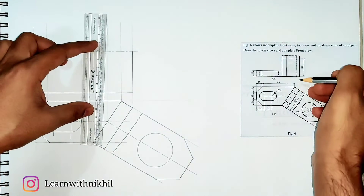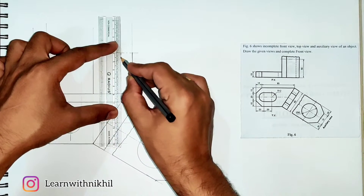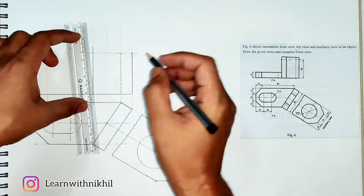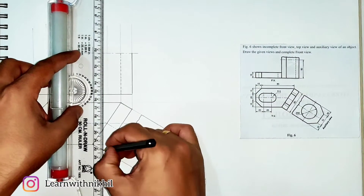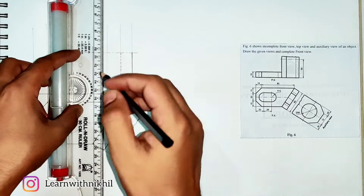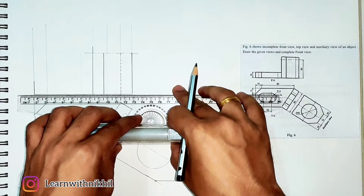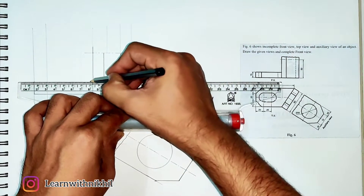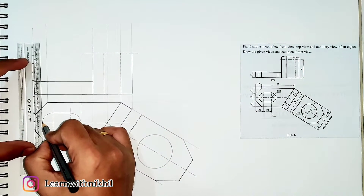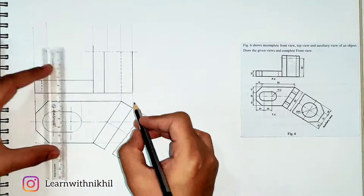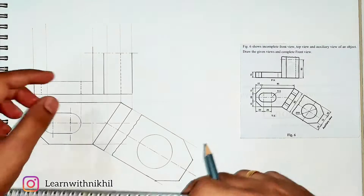Drawing this edge dark. This part is behind, so it is dotted — it is hidden. This edge is also dark as it is in front. Joining this part dark. Now this semicircle is also hidden in the front view, so drawing it dotted. This is already given in the question — we are just redrawing it.